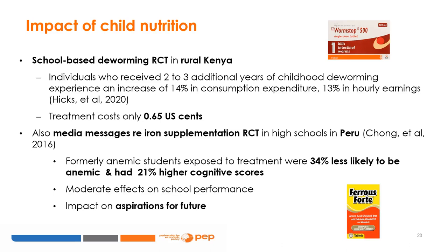A school-based deworming RCT in rural Kenya by Michael Kremer and colleagues showed that parasites like worms can cause poor nutrition absorption, for example iron deficiency and anemia. Children who received two to three additional years of deworming experienced a 14% increase in consumption expenditure and a 13% increase in hourly wages. The treatment is very cost effective at 65 US cents per treatment. A study by Alberto Chung and co-authors on media messages about iron supplementation in high schools in Peru found that formerly anemic students exposed to treatment were 34% less likely to be anemic and had 21% higher cognitive scores, with a moderate effect on schooling and improved aspirations for the future.